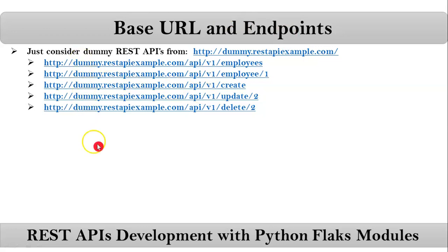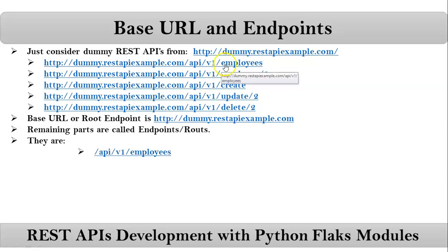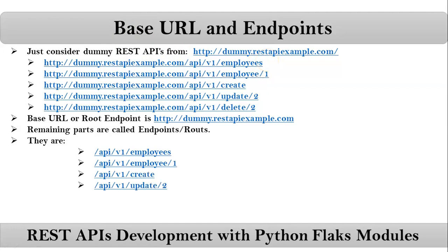If you observe here, in each and every REST API, up to the .com, that portion is called simply the base URL or root endpoint. So if you want to implement any REST APIs, first you have to decide what your base URL is. Apart from the base URL, whatever the remaining part is in each REST API, those are called simply endpoints or routes. The available endpoints are slash API slash v1 slash employees — that remaining part after the base URL.